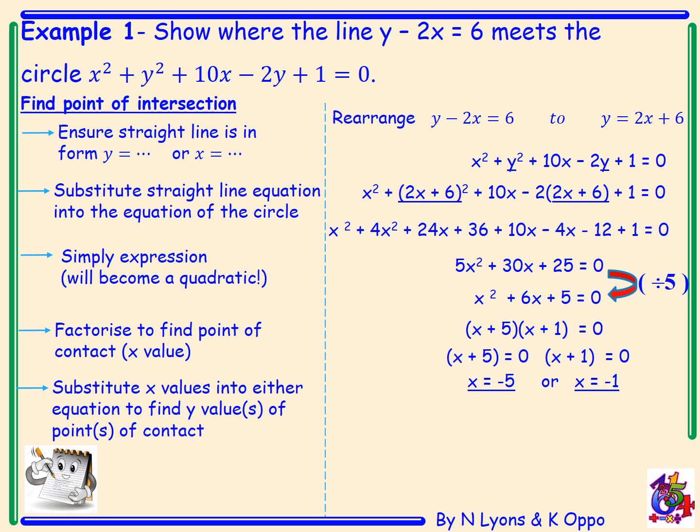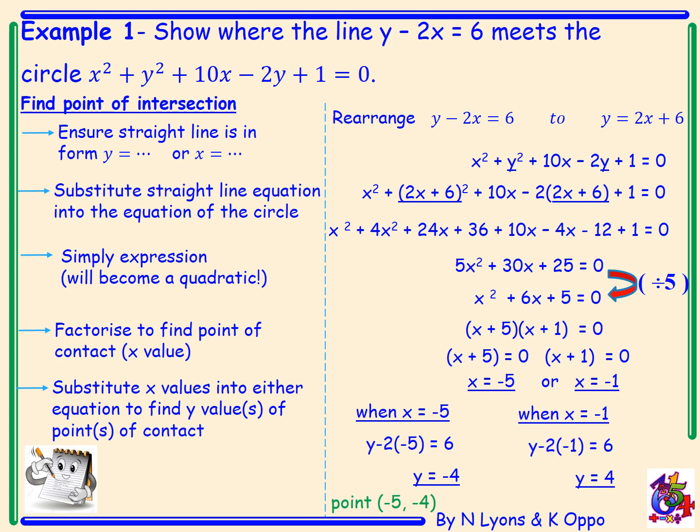From there we need to find our y values. You can substitute the x coordinates into the circle equation if you wish, but using the straight line is far easier. When x is minus 5: y minus 2 times minus 5 equals 6, so y plus 10 equals 6, giving y equals minus 4. The first point of contact is (negative 5, negative 4). When x is negative 1: y minus 2 times minus 1 equals 6, so y plus 2 equals 6, giving y equals 4. The second point of contact is (negative 1, 4).